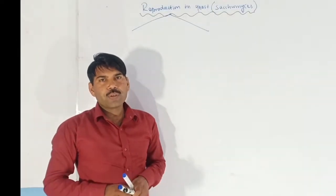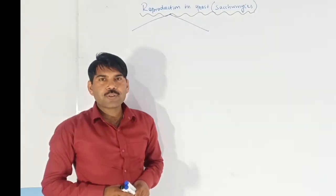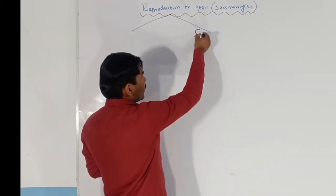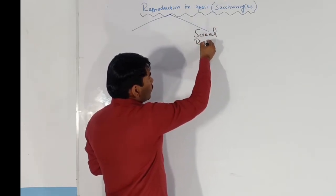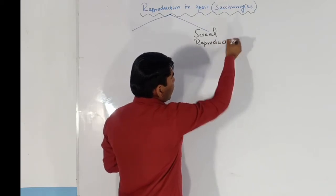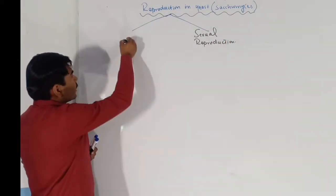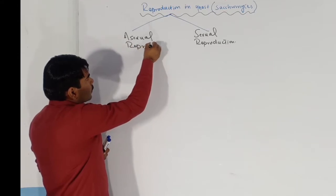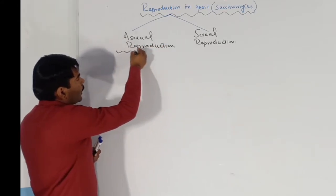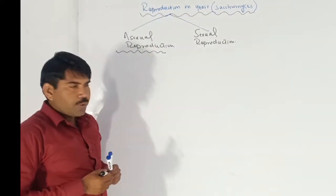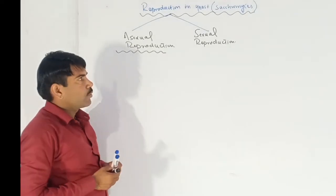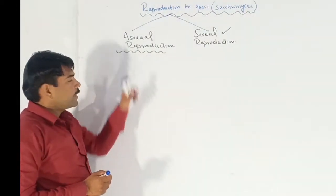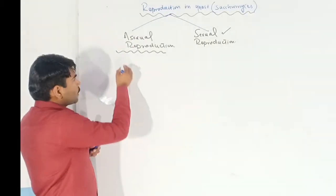Assalamu alaikum students, today we are going to discuss reproduction in yeast or Saccharomyces. There are two types of reproduction: the first type is sexual reproduction and the second type is asexual reproduction. We will start with asexual reproduction, and in the next lecture we will discuss sexual reproduction.